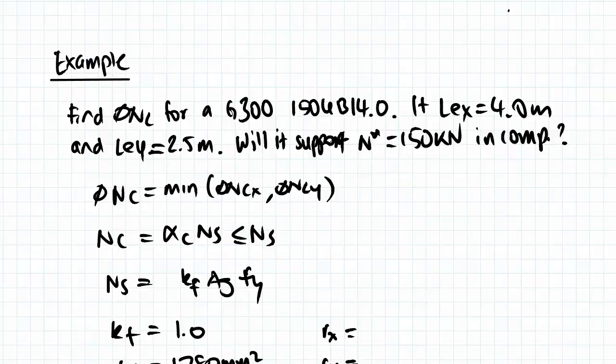In this example, our effective length will already be given to us, however that might not always be the case depending on the question. We're going to look at effective length in more detail in the next couple of videos, but for this example they'll be given to us already and we'll use that to solve for our design member capacity.